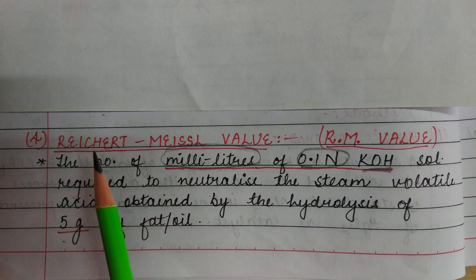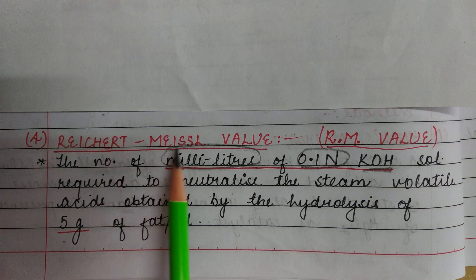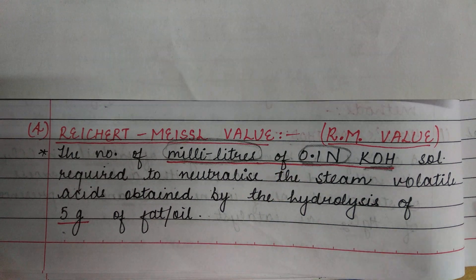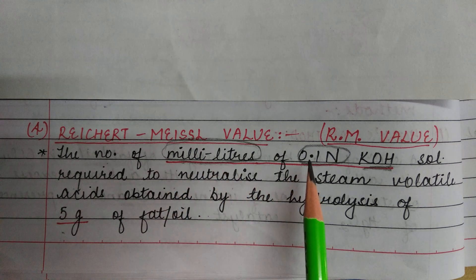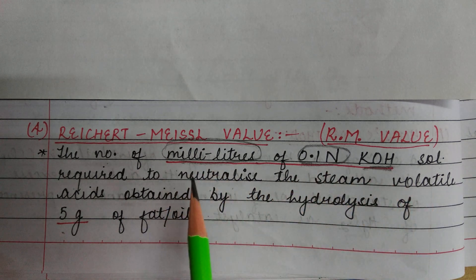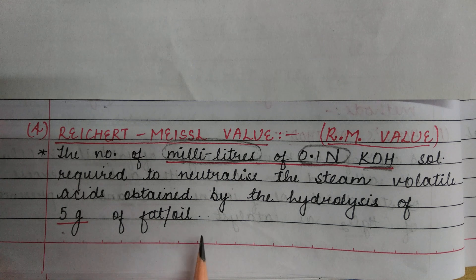The fourth chemical constant is Reichert-Meissl value, in short called Rm value. It is defined as the number of milliliters of 0.1 normal KOH solution required to neutralize the steam volatile acids obtained by the hydrolysis of 5 grams of fat or oil.